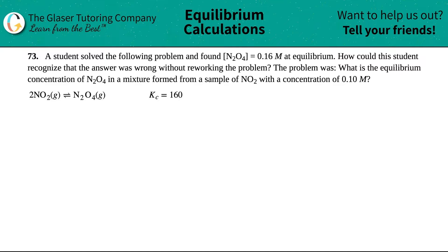Number 73. A student solved the following problem and found the concentration of N2O4 was 0.16 molarity at equilibrium. How could the student recognize that the answer was wrong without reworking the problem? The problem was: what is the equilibrium concentration of N2O4 in a mixture formed from a sample of NO2 with a concentration of 0.10 molarity?